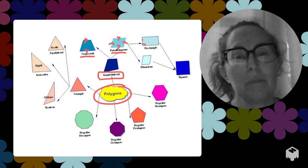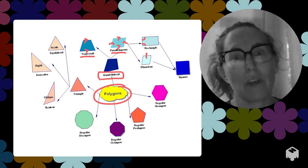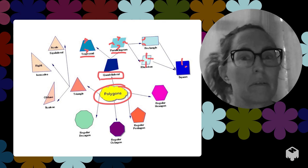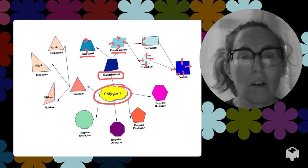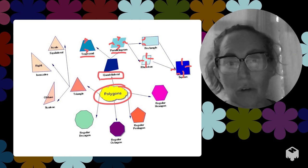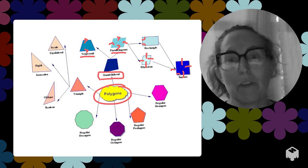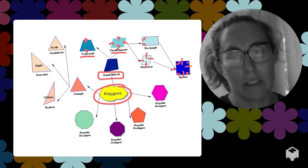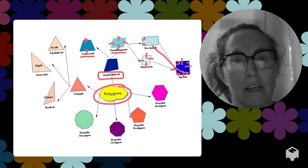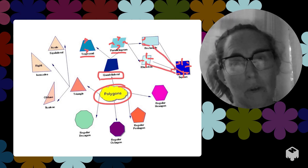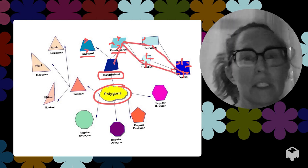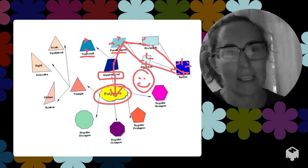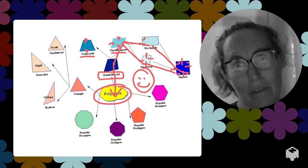In that same subset of parallelograms, if you had right angles, it would be a rectangle. If you had all sides congruent, it would be a rhombus. And if you had all of those things, it would be a square. What's kind of funny is a square is a rectangle, is a rhombus, is a parallelogram, is a quadrilateral, is a polygon — and that can be a little confusing.